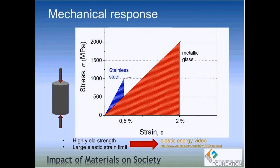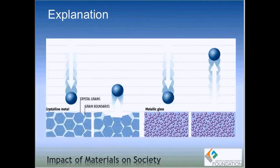High strength and high strain limit actually translates into large elastic strain energy. If you click on the link provided, it takes you to a short demonstration about the difference in elastic strain energy for amorphous and crystalline metals. In that video, three identical steel balls are dropped on three surfaces: two crystalline metals — stainless steel and titanium — and one metallic glass, referred to as 'liquid metal,' which is a trade name for metallic glass sold by Liquid Metal Technology.